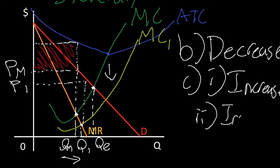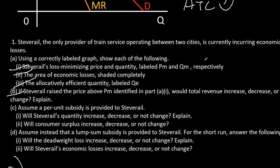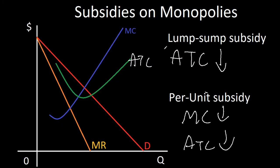Subsidizing a monopoly will both increase the quantity they produce and decrease the price they sell at, approaching allocative efficiency and decreasing deadweight loss. Lastly, for part D, it's asking about a lump sum subsidy provided to Steve Rail. We must remember that lump sum subsidy only affects the ATC curve. That means his average total costs are decreasing.